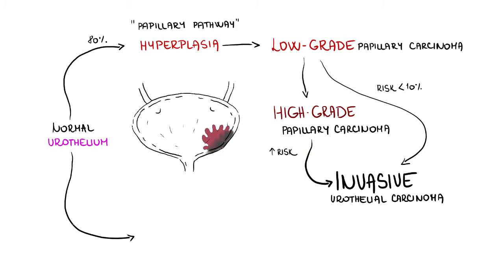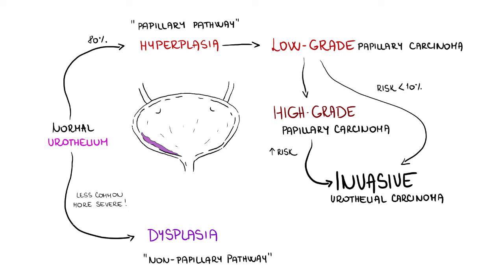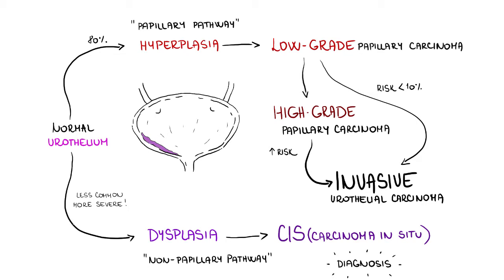The second pathway is less common but more severe from the clinical point of view — it is the non-papillary pathway. Histologically, it takes the form of so-called flat urothelial dysplasia. It is usually referred to as urothelial carcinoma in situ, since it is diagnosed at this stage in most cases, but in rare instances lower grades of flat dysplasia may be seen. Urothelial carcinoma in situ is a high-grade lesion with fast progression to invasive cancer in more than 70% of cases.